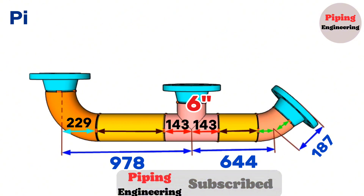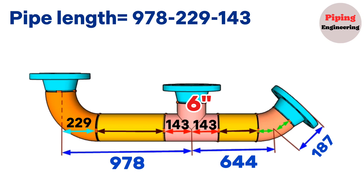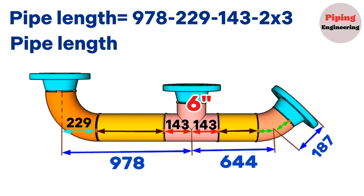Pipe length equals the total length 978, minus the 6-inch 90-degree elbow length 229, minus the 6-inch equal T center to N dimension 143, and minus 2 times 3 millimeters gap for welding. We calculate and find that the first yellow color pipe length equals 600 millimeters.